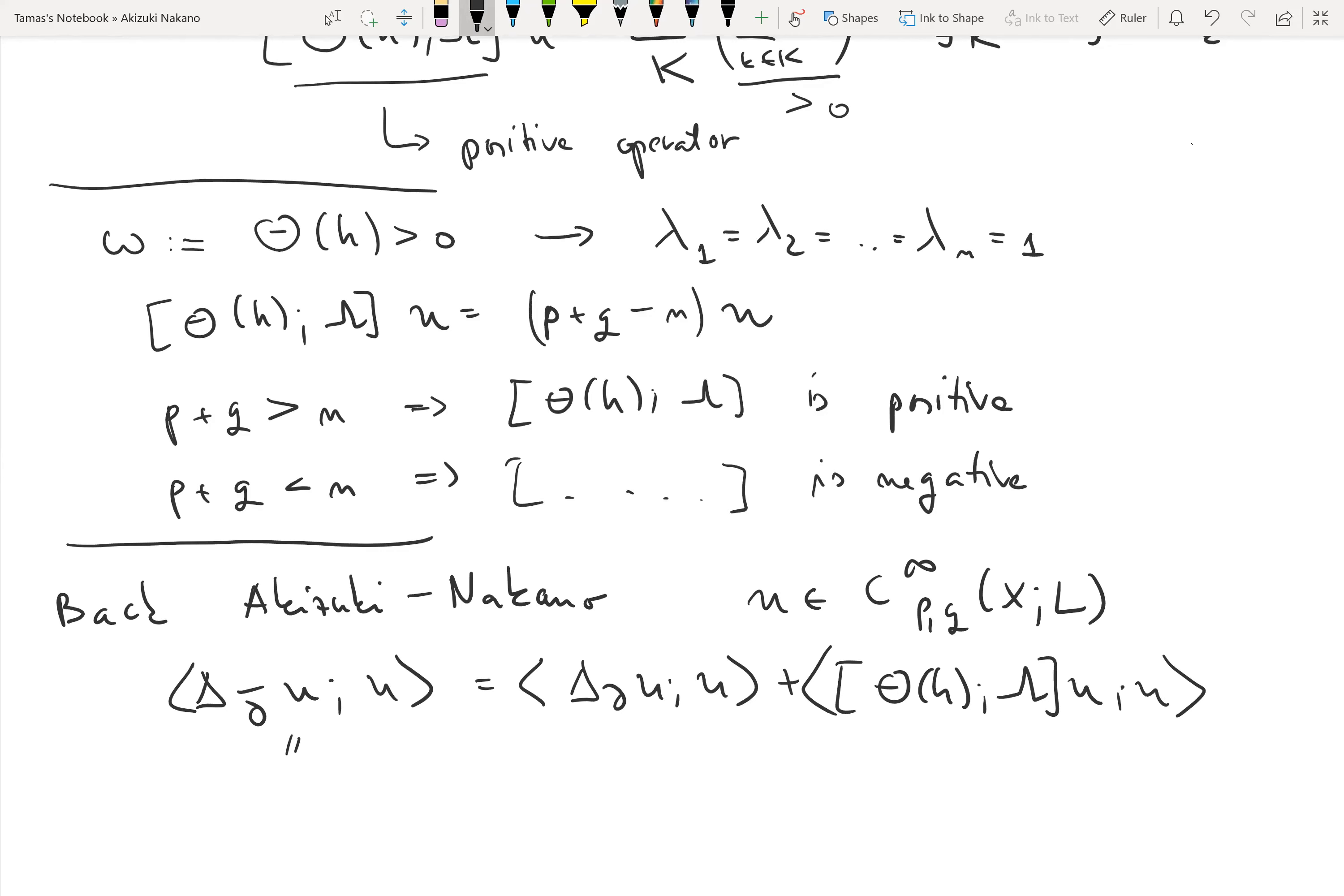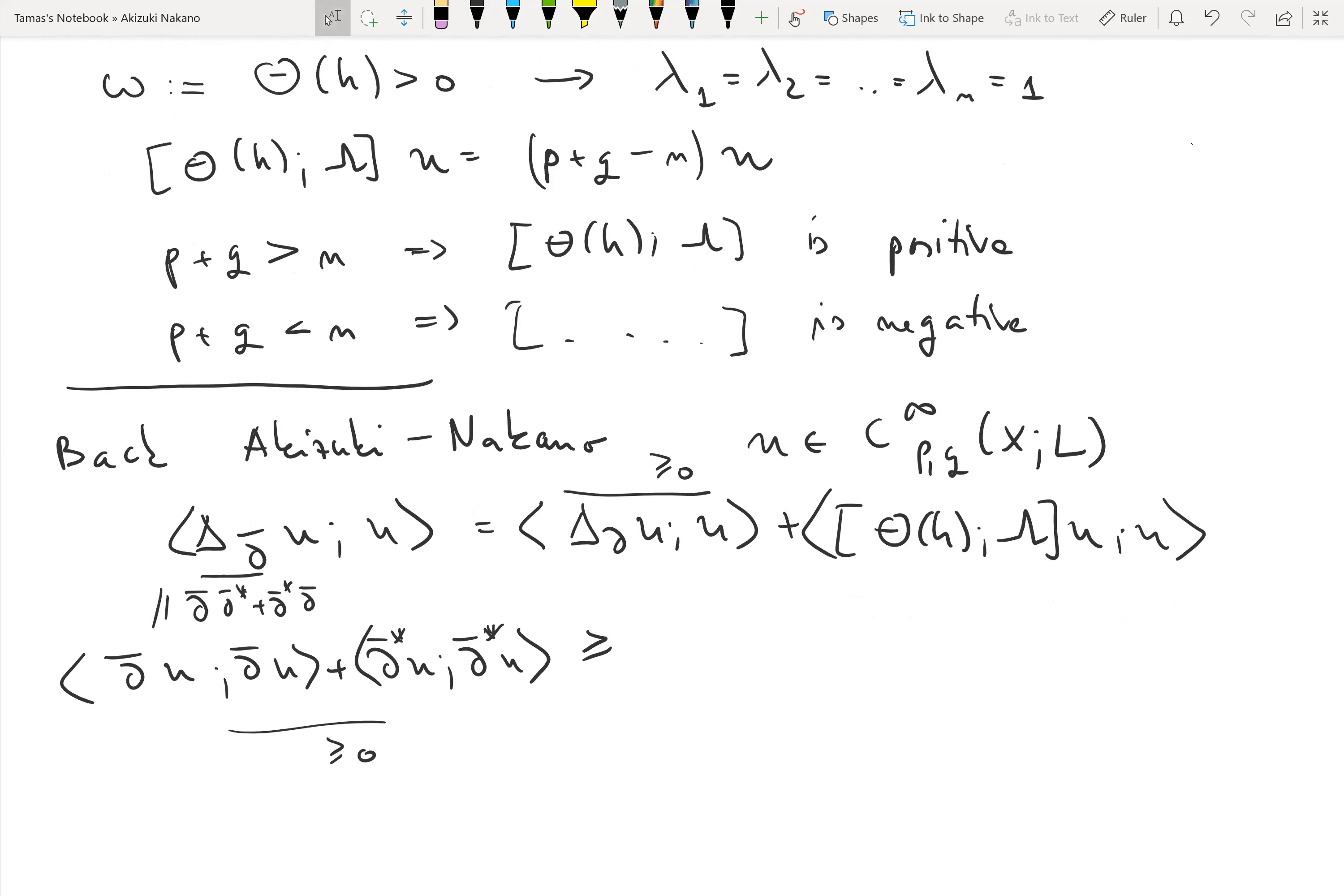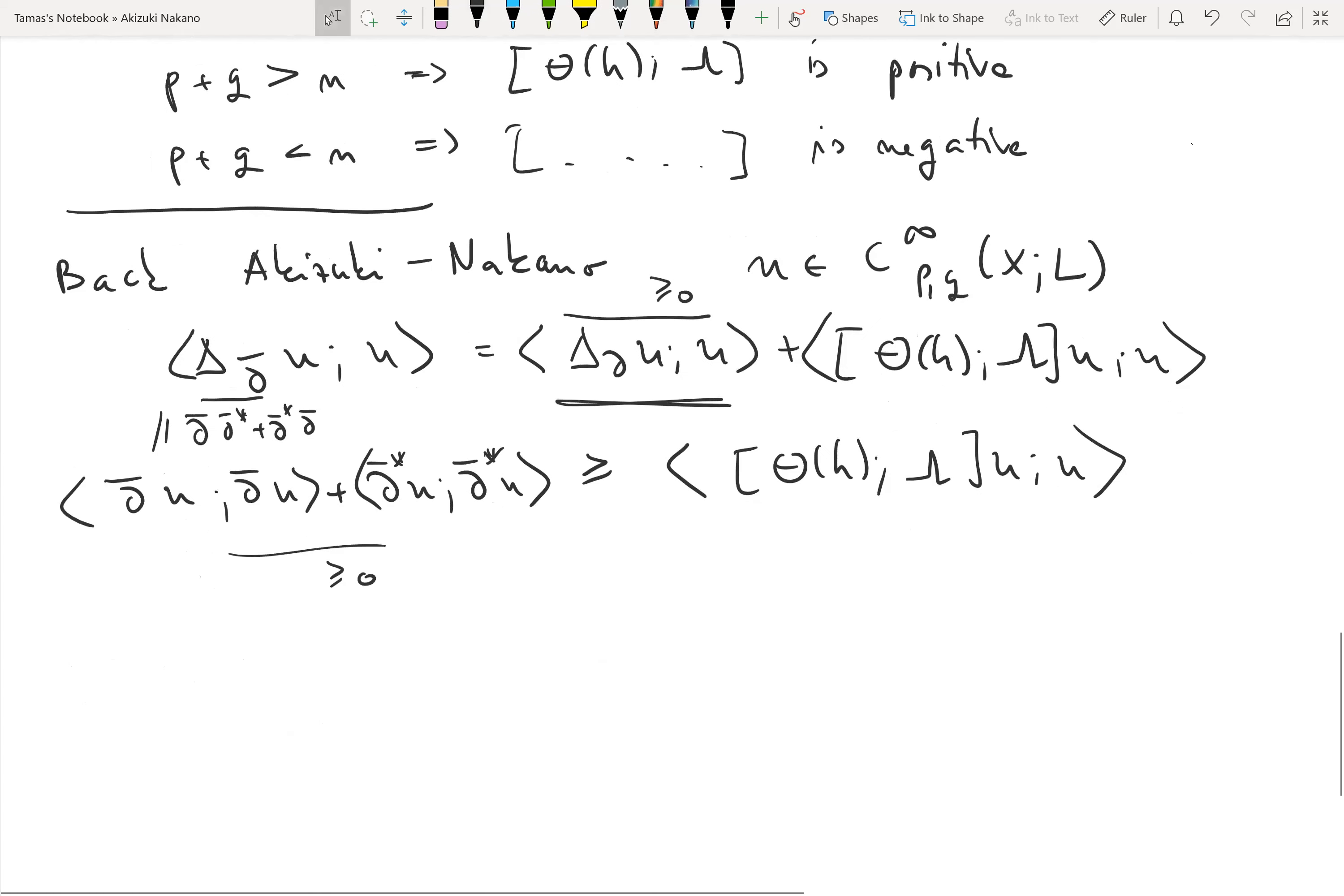Let's see how this helps us understand a bit of geometry. Let's go back to Akizuki-Nakano. Let's pick now u, a global p,q form on L, and let's plug this u into Akizuki-Nakano. Let's first focus on this term here. This is del-bar del-bar star plus del-bar star del-bar. If I use integration by parts, I will get the inner product of del-bar u with del-bar u plus the inner product of del-bar star u with del-bar star u.